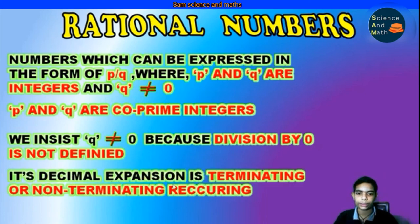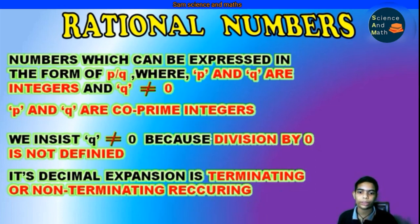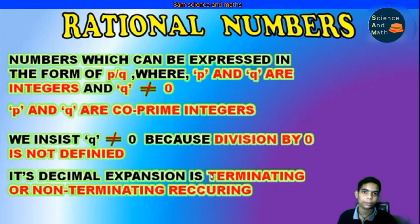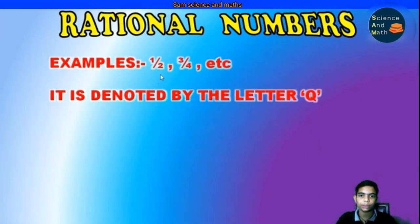Next point: the decimal expansion of a rational number is either terminating or non-terminating recurring. Examples include 1/2, 3/4, etc. Rational numbers are denoted by the letter Q.